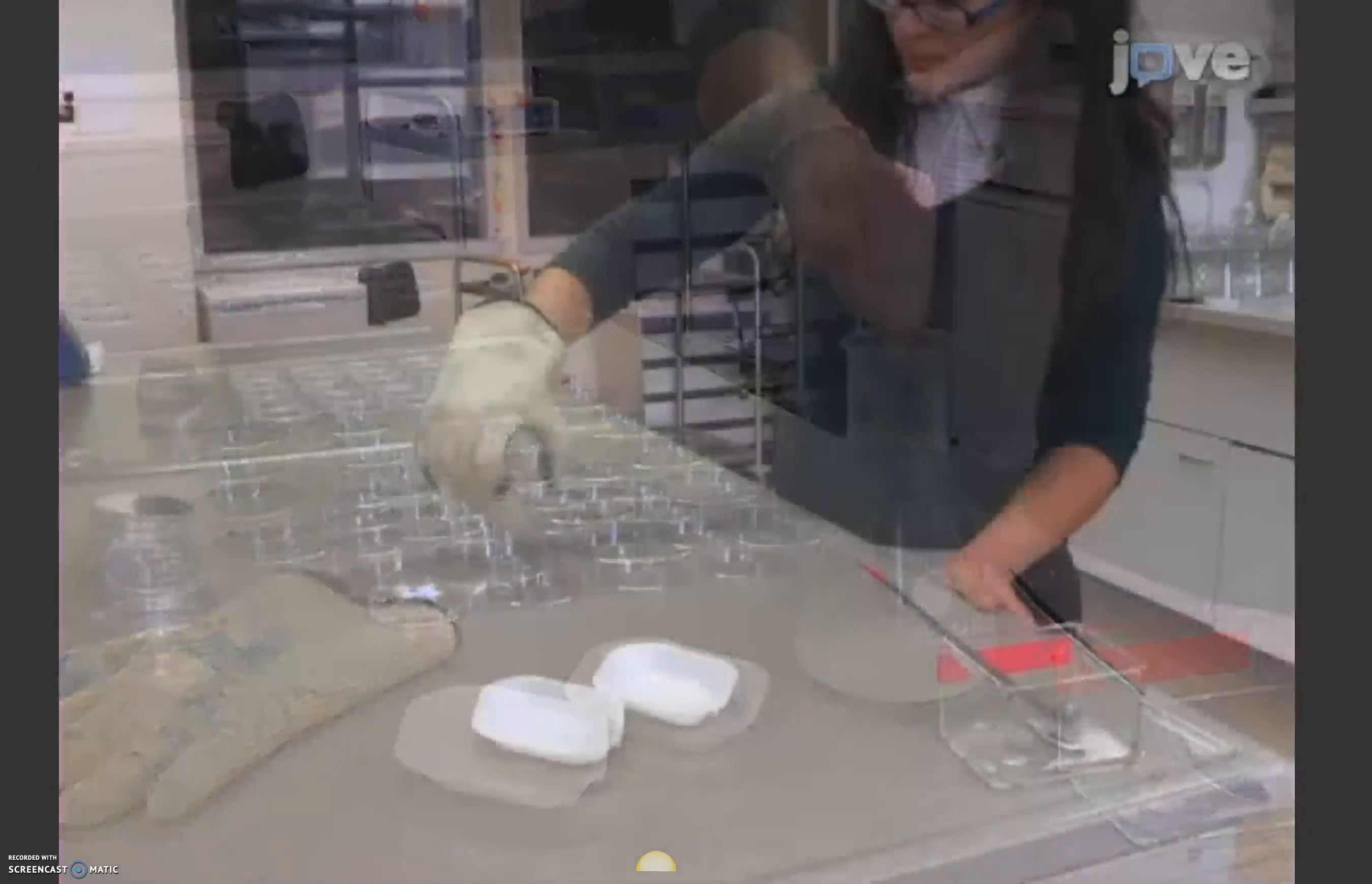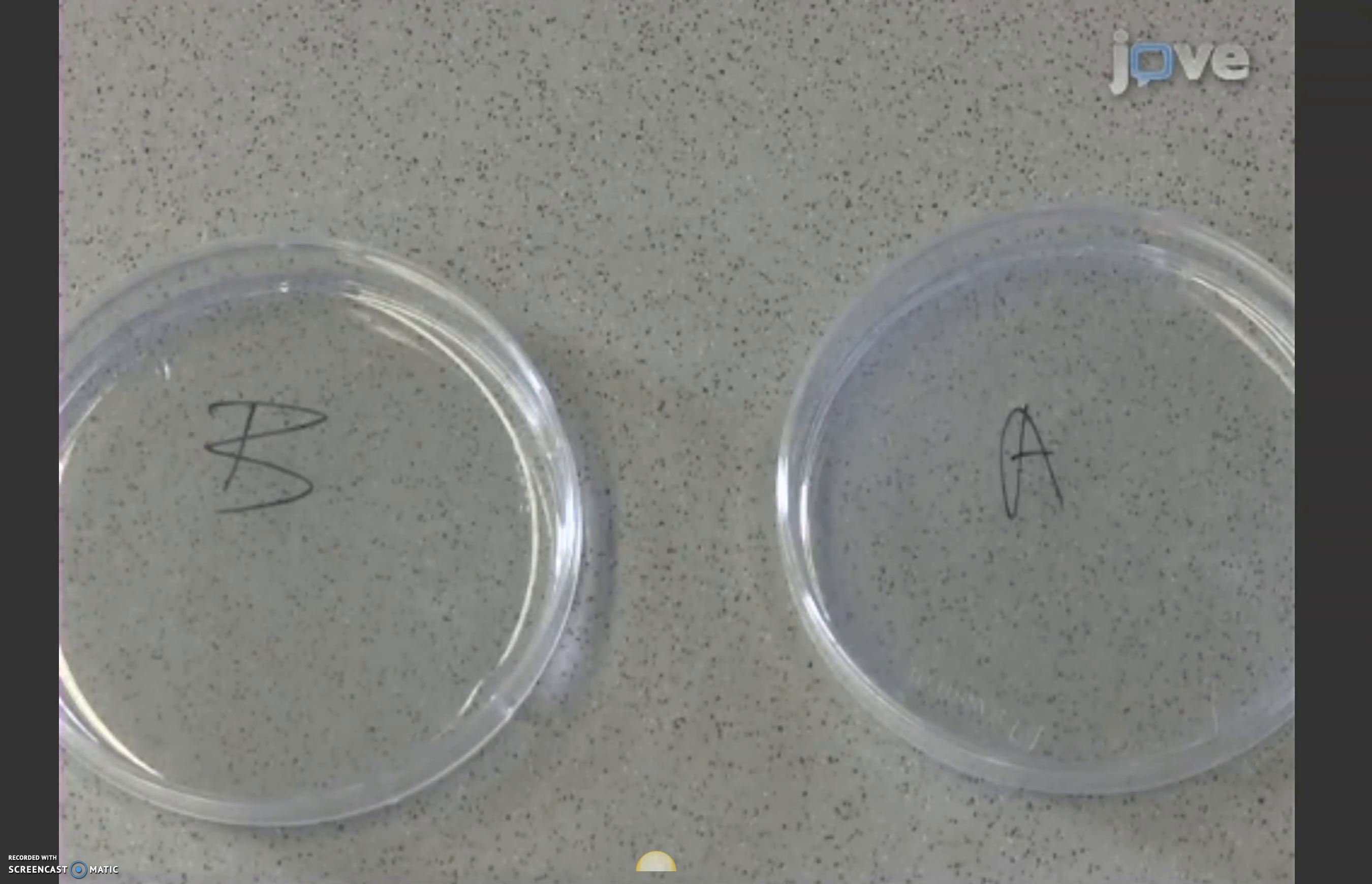Next, label each of these dishes with a different symbol that will blind the experiment. The fructose-containing dish is the conditioning reward, and the plain dish is the non-reward.